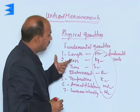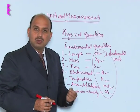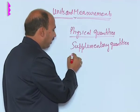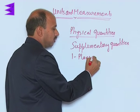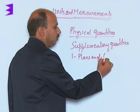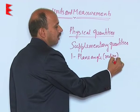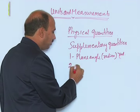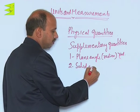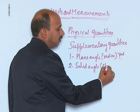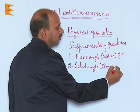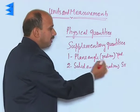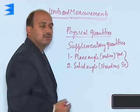Besides these seven fundamental quantities, there are two supplementary quantities also. The first one is plane angle, which is measured in radian, symbol rad. The other one is solid angle, measured in steradian, symbol sr. These two quantities are considered as supplementary quantities.